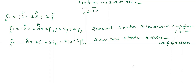So first of all, carbon's electronic configuration. Carbon has atomic number 6, which means carbon has 6 protons in the nucleus, and in the form of an atom it has 6 electrons. In the first shell, there is one sub-shell which is S, and there will be 2 electrons.